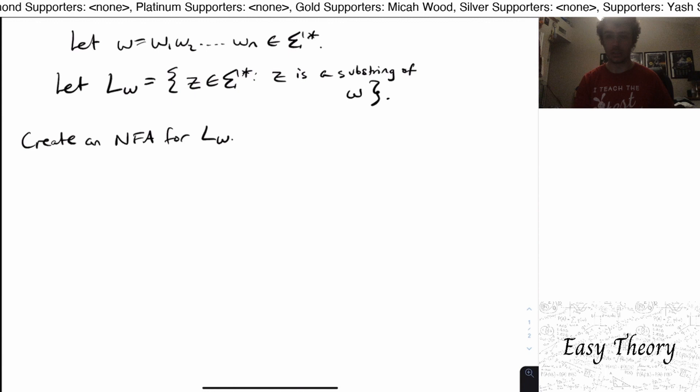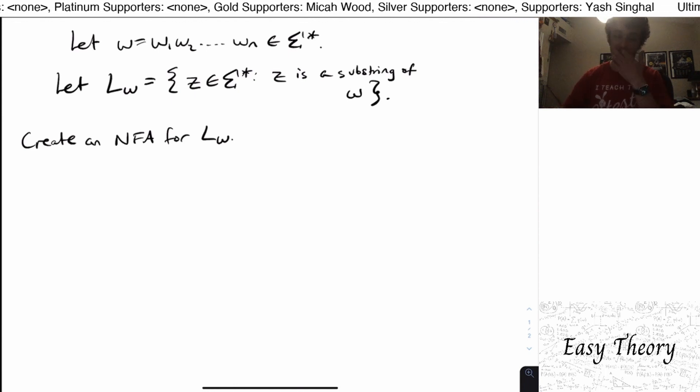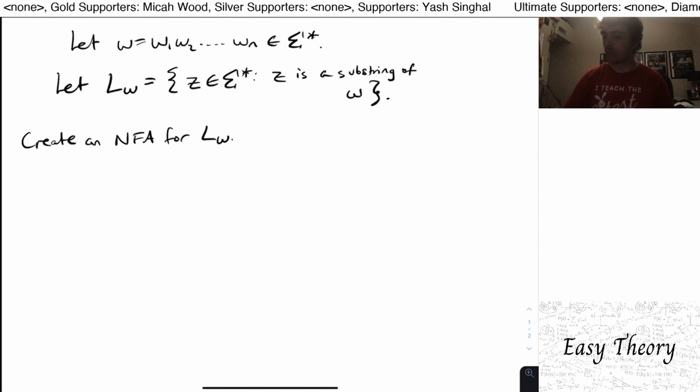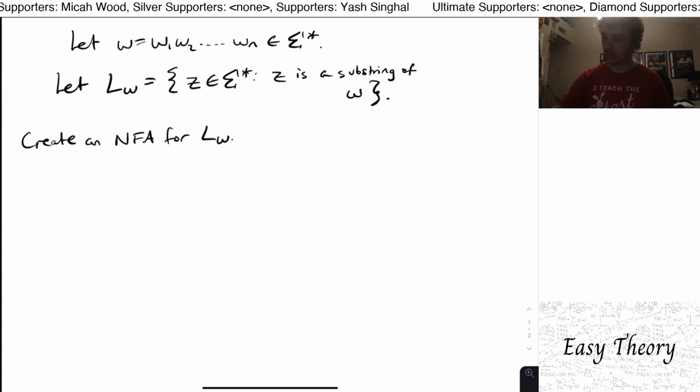Hi, and welcome back to another edition of Easy Theory. So today we're going to be looking at this question, which was suggested to me on a recent live stream, which is we're going to have a given string right here in sigma star, and we're going to create a language of all the strings z, where z is a substring of w.